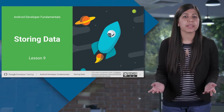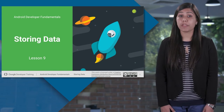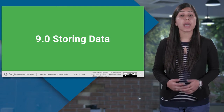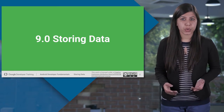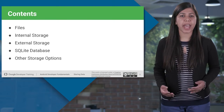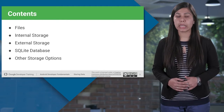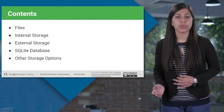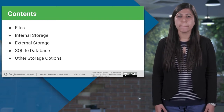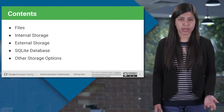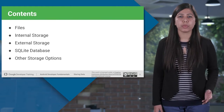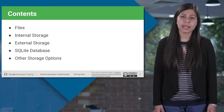Android provides several data storage options for you to save persistent application data. This lesson covers an overview of the data storage options to store your application data. Most Android apps need to save data, even if only to save information about the app state so the user's progress is not lost. Most apps need to save user settings, and some apps must manage large amounts of information in files and databases.